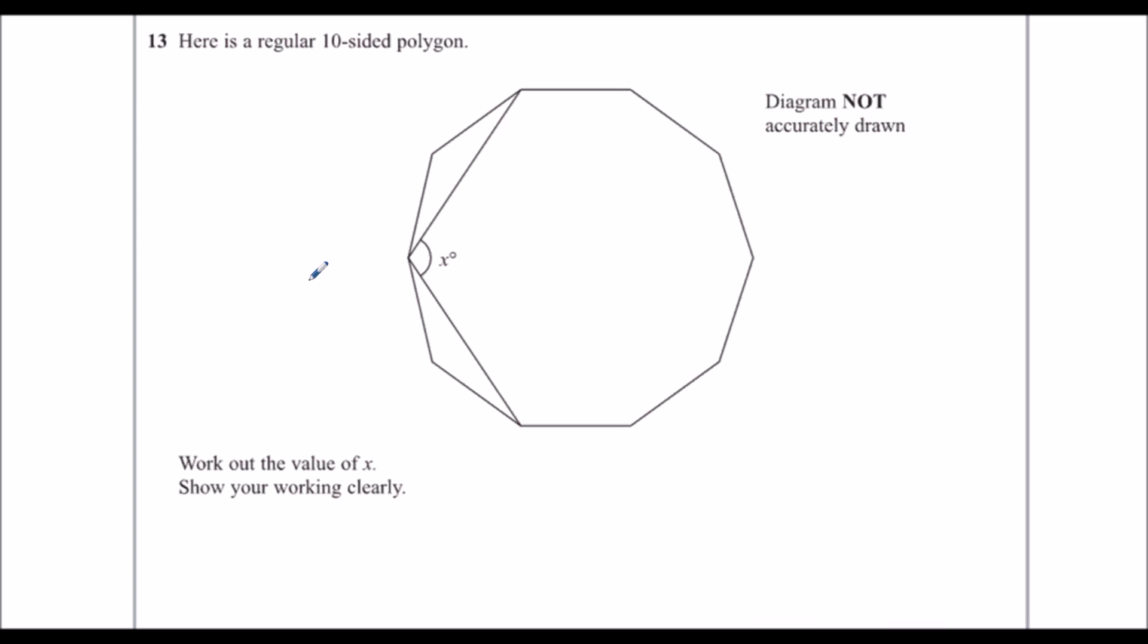Okay, so we've got a regular ten-sided polygon. Regular means all the lengths are the same. And we need to work out this value of x here.